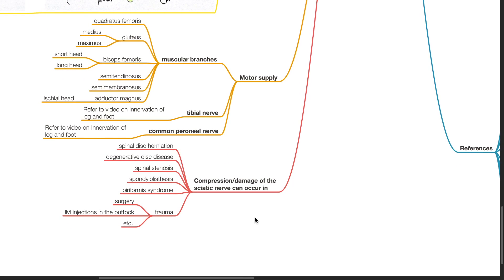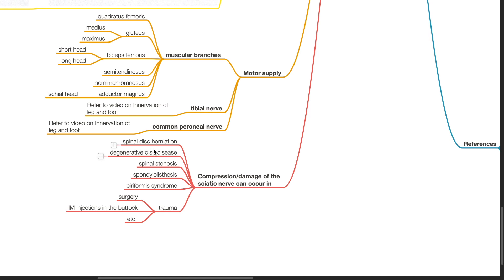Compression or damage of the sciatic nerve can occur in spinal disc herniation, degenerative disc disease, spinal stenosis, spondylolisthesis, piriformis syndrome and trauma from surgery, IM injections of the buttock, etc.